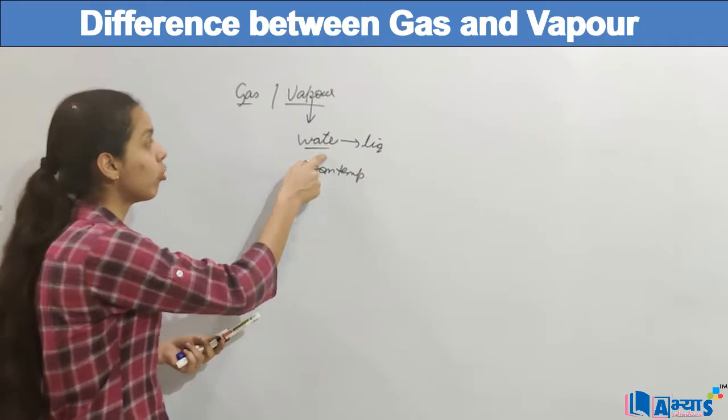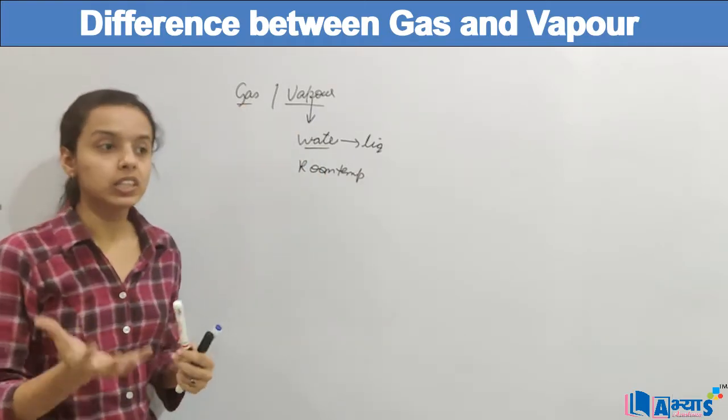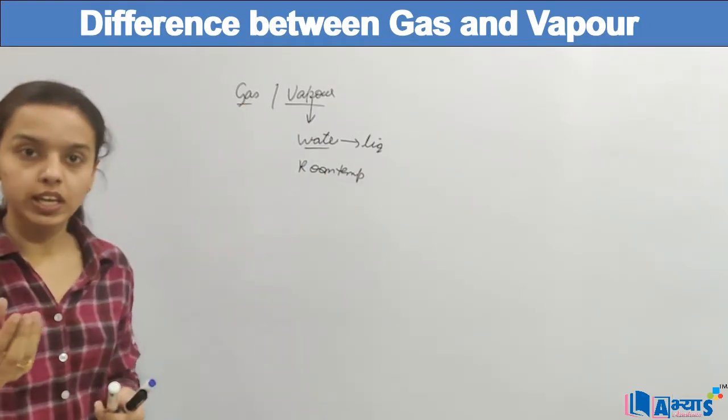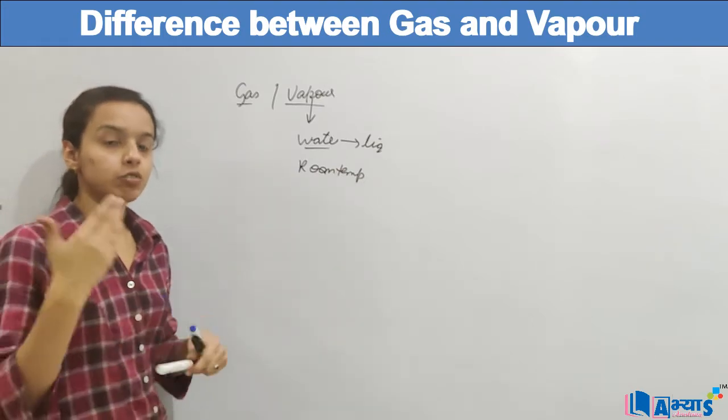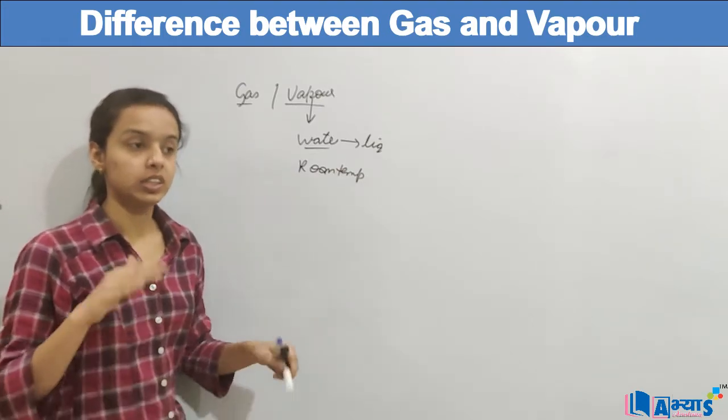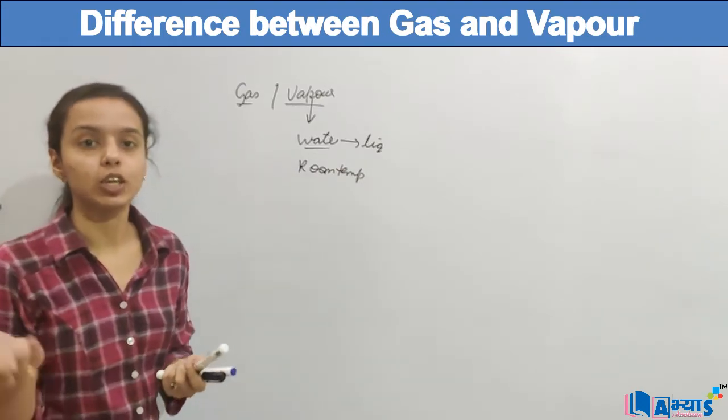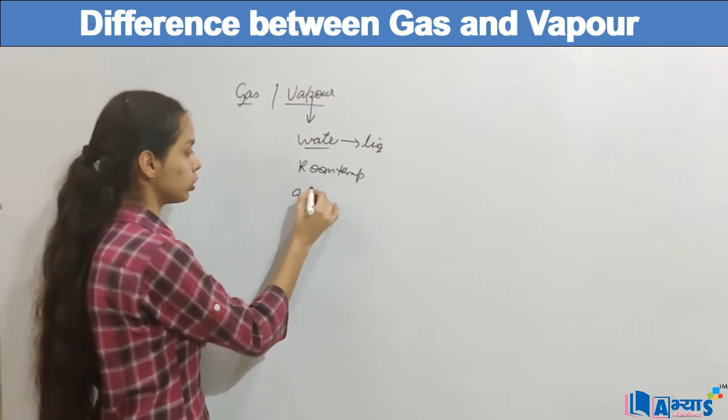We never say that it has become water gas. So that means vapour is used for those liquids or for those gases which are liquid at room temperature. There is one example, that is the case of water. You can take the case of alcohol also.